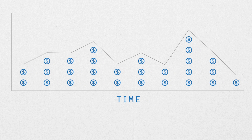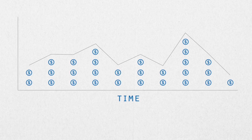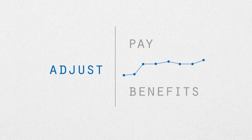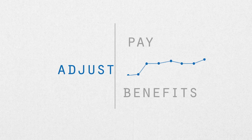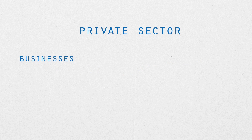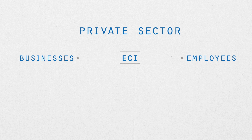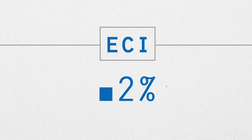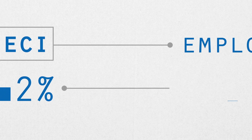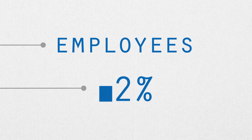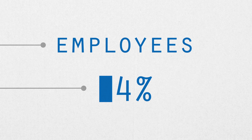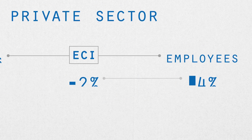So let's go over how to use the ECI. Decision makers use the ECI to adjust pay and benefits. In the private sector, business owners and human resource professionals can use the ECI to make decisions that affect their employees. Say the ECI shows that wages and salaries have gone up by 2% over the year — businesses can decide to give everyone a raise of 2% to stay competitive, or give a larger raise to help attract and retain quality employees.